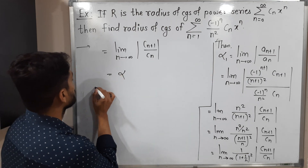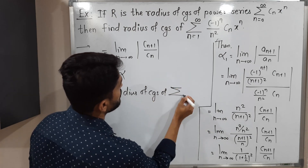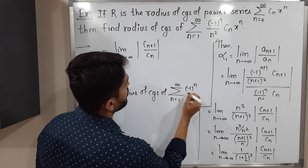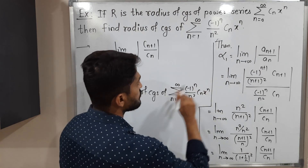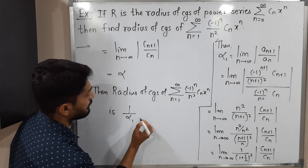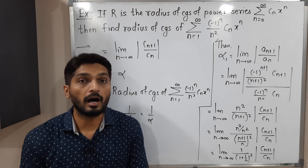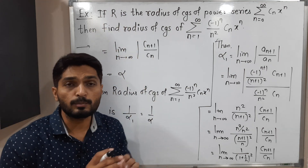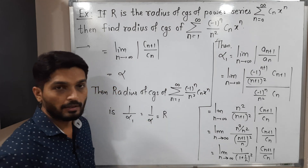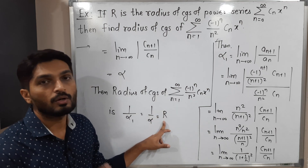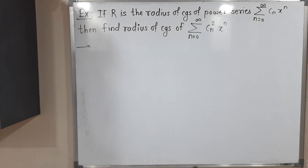Therefore, the radius of convergence of the series summation from n = 1 to infinity of ((-1)ⁿ / n²) · cₙ · xⁿ is 1 / α₁ = 1 / α = R. So the radius of convergence of this power series is also R.